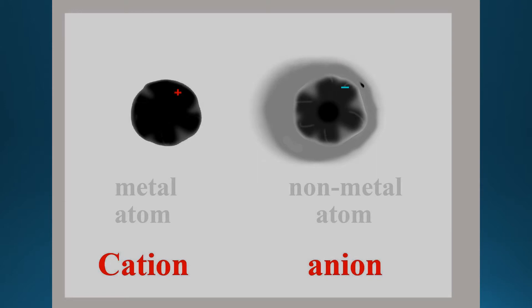Negative means you have more electrons, because electrons are negative. Now the positive ion originally comes from the metal atom.